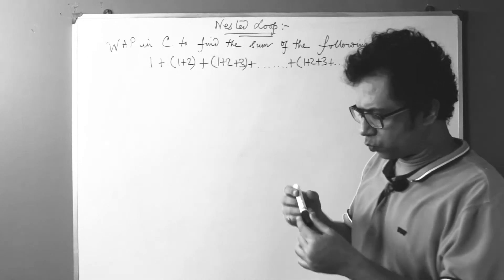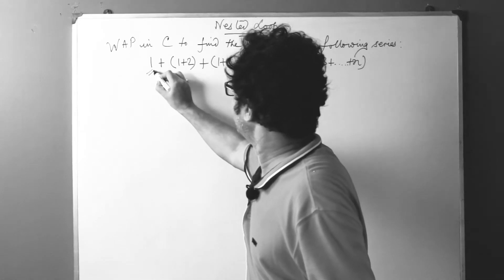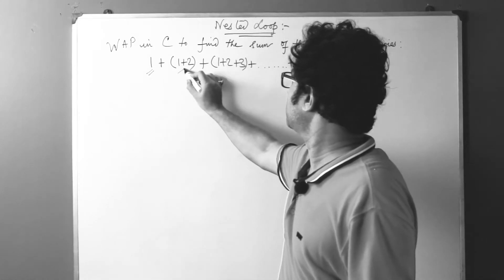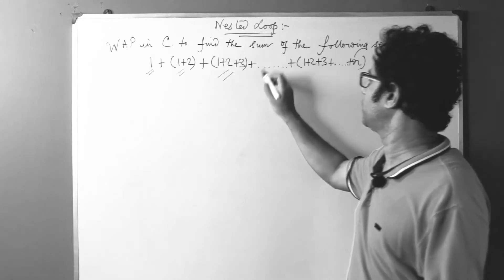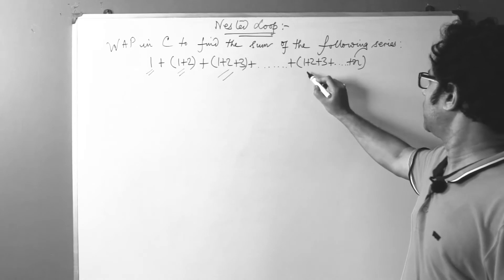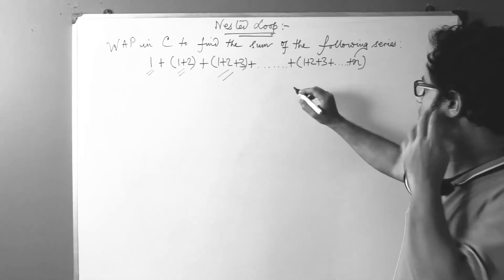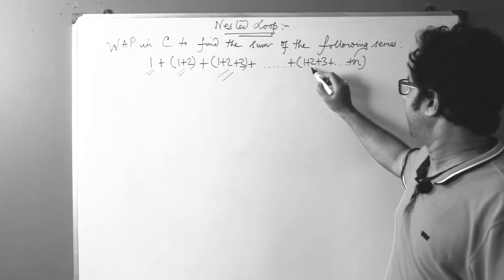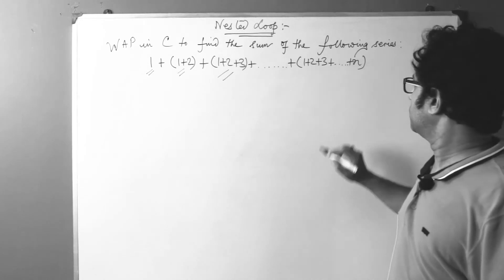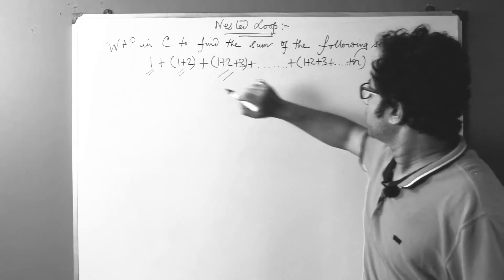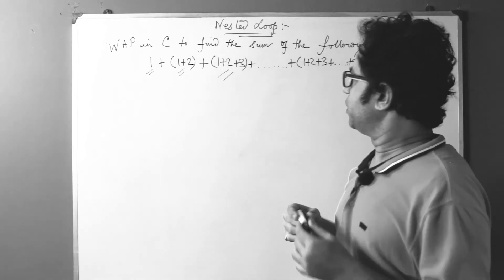What is to be noted in this series is that the first term contains a single number, the second term contains two numbers, the third term contains three numbers, the fourth term will contain four numbers, and so on. Until the last term — if you set the limit to n — that last term will contain n numbers.